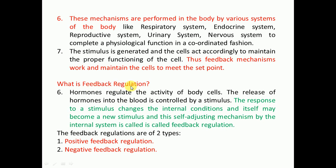What is feedback regulation? Hormones regulate the activity of body cells. The release of hormones into the blood is controlled by a stimulus, and the response to that stimulus changes internal conditions, which itself may become a new stimulus. This self-adjusting mechanism of the internal system is called feedback regulation. Feedback regulation can be of two types: positive feedback regulation and negative feedback regulation.